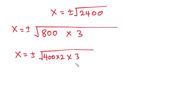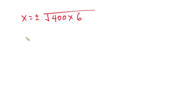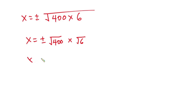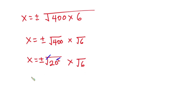Simplifying further, 800 is the same as 400 times 2, then times 3 over here. So we have x is equal to plus or minus square root of 400 times 6, which is the same as square root of 400 times square root of 6. Square root of 400 gives us 20, so x is equal to plus or minus 20 root 6.